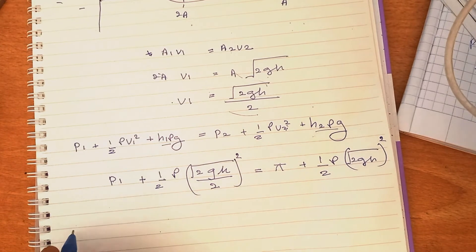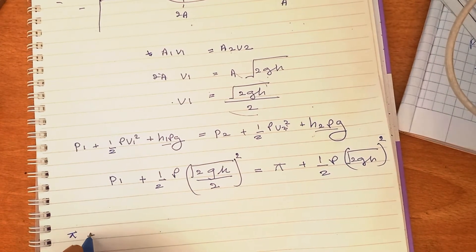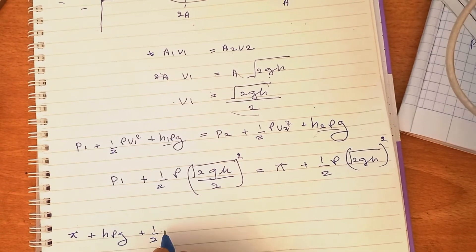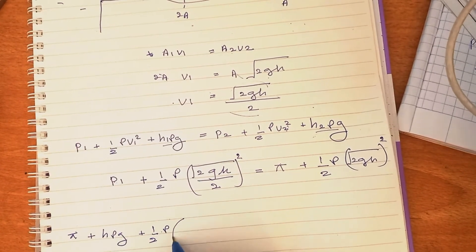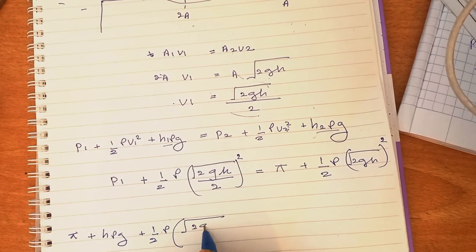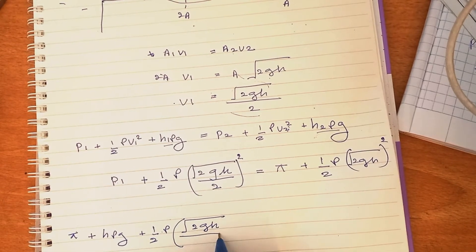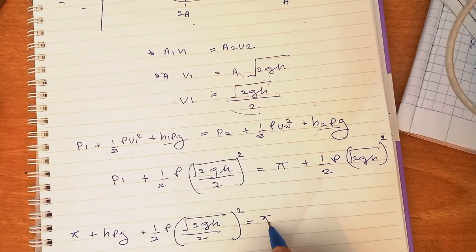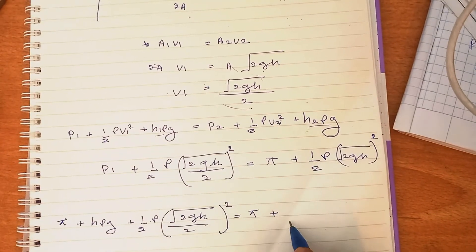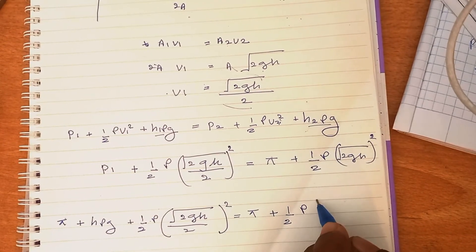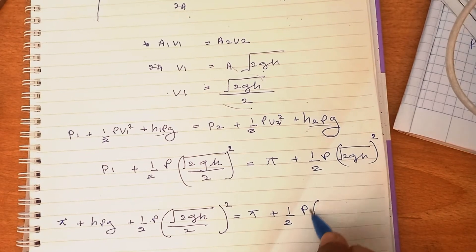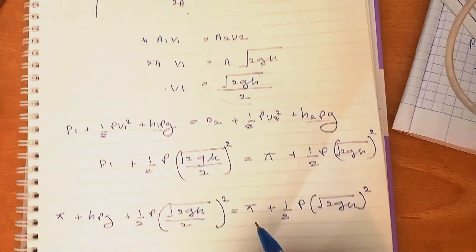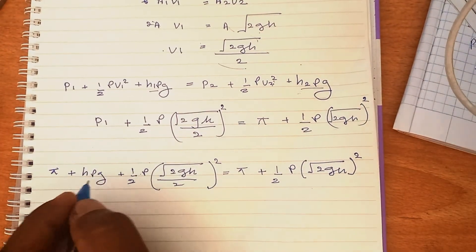P₁ = Pᵢ + capital H·ρg + 1/2ρ[√(2gh)/2]² = Pᵢ + 1/2ρ[√(2gh)]². This is capital H. Pᵢ cancels.